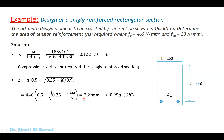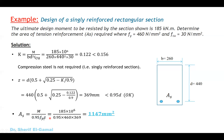Step two: calculate z by substituting k equal to 0.122 into the formula. Z is calculated as 369 mm, which is less than 0.95d, so we use it as is. Step three: calculate the area of steel required equals m over (0.95 F yield times z), substituting the values of z and F yield equal to 460.